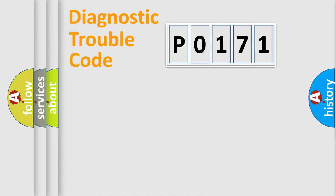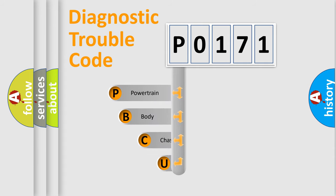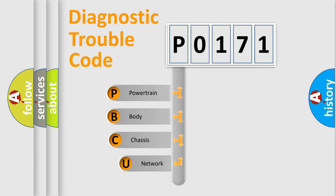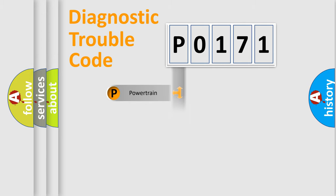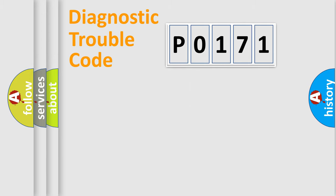Let's look at the history of diagnostic fault code composition according to the OBD-II protocol, which is unified for all automakers since 2000. We divide the electric system of the automobile into four basic units: Powertrain, Body, Chassis, and Network.